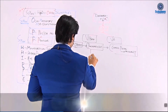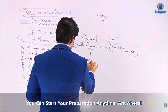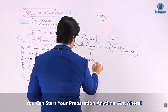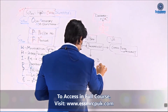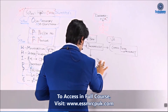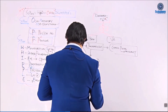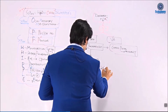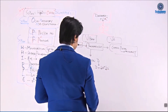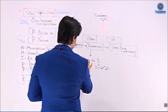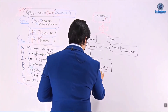In VIPoma, the key clinical feature is large volume diarrhea — this is the most important part. Large volume diarrhea leads to dehydration, weight loss, hypokalemia, and hypochlorhydria.